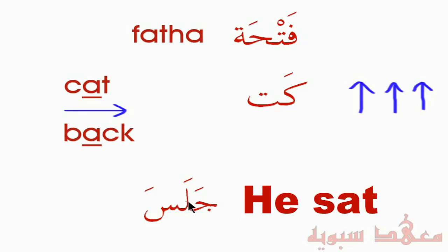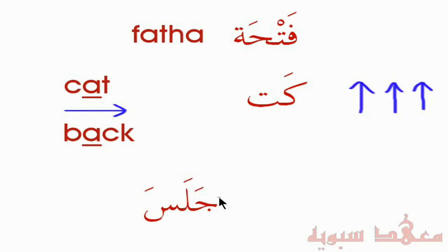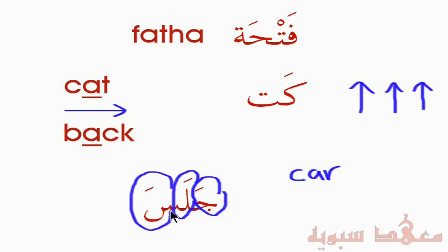Notice there's no elongation of the A sound — we don't say 'Jaa-Laa-Saa.' For example, when we say the word 'car,' there's an elongation — 'Caar.' But in Arabic, the Fatha is a short, quick sound. So it's Ja-La-Sa, not 'Jaa-Laa-Saa.' The elongated vowel sound is written differently and will be explained later.